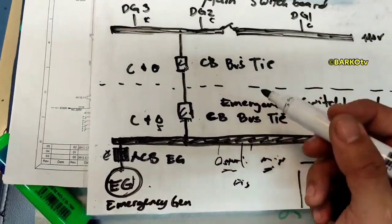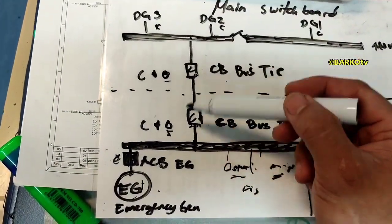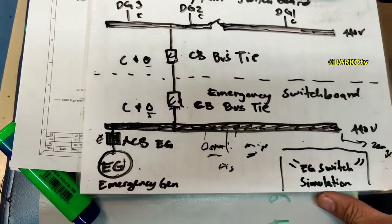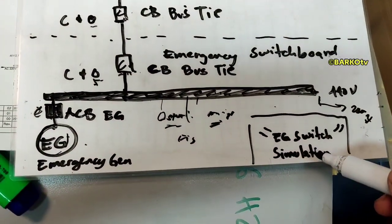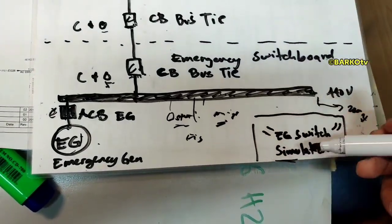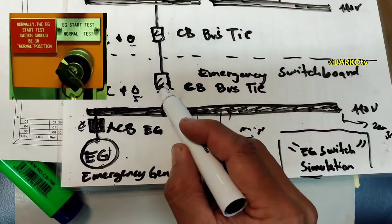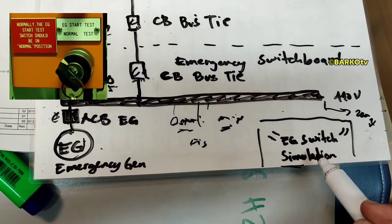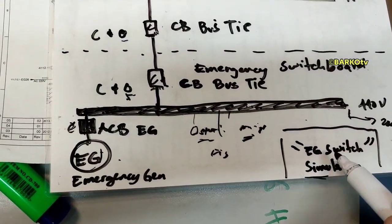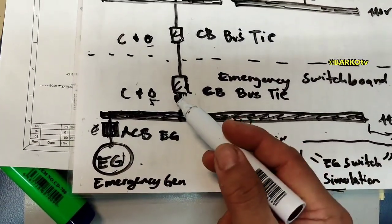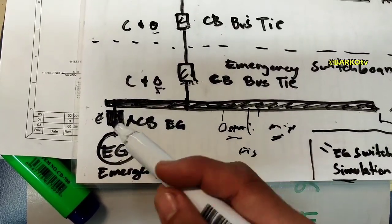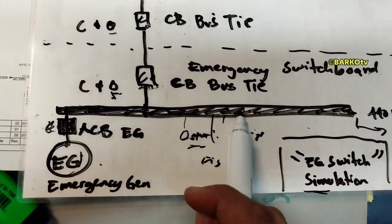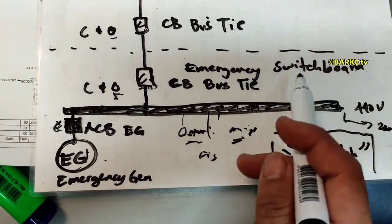The third scenario is using the simulation switch. When you turn the simulation switch to test, it commands the bus tie breaker located at the emergency switchboard to open. The simulation switch commands that breaker to open. After that, the emergency generator automatically starts, and after the delay the ACB closes and supplies the emergency switchboard.